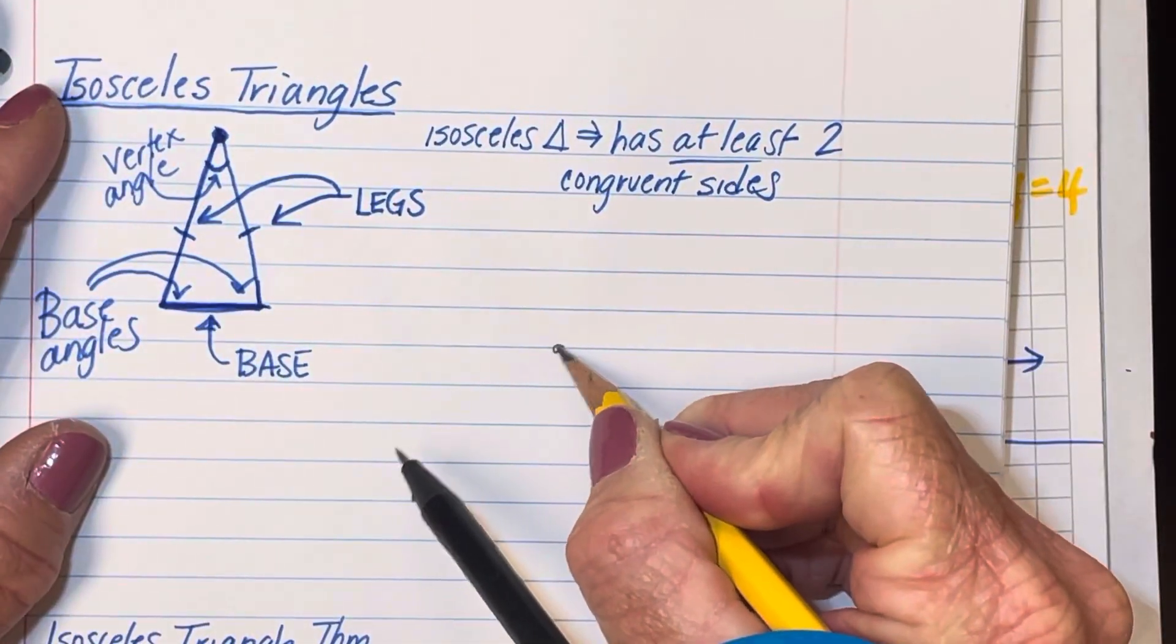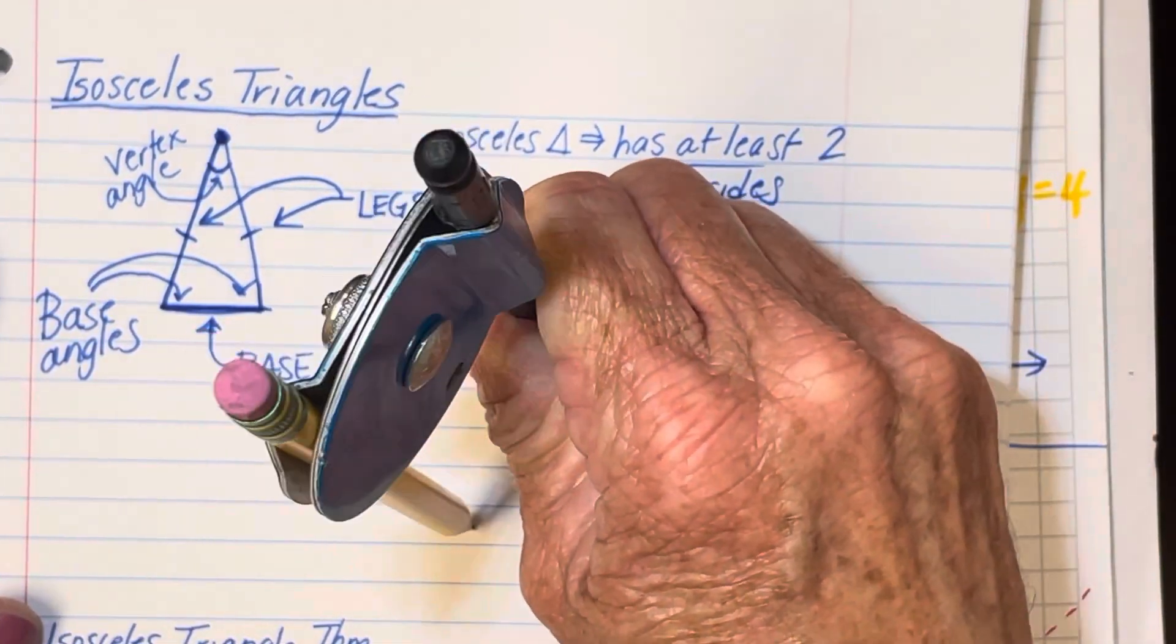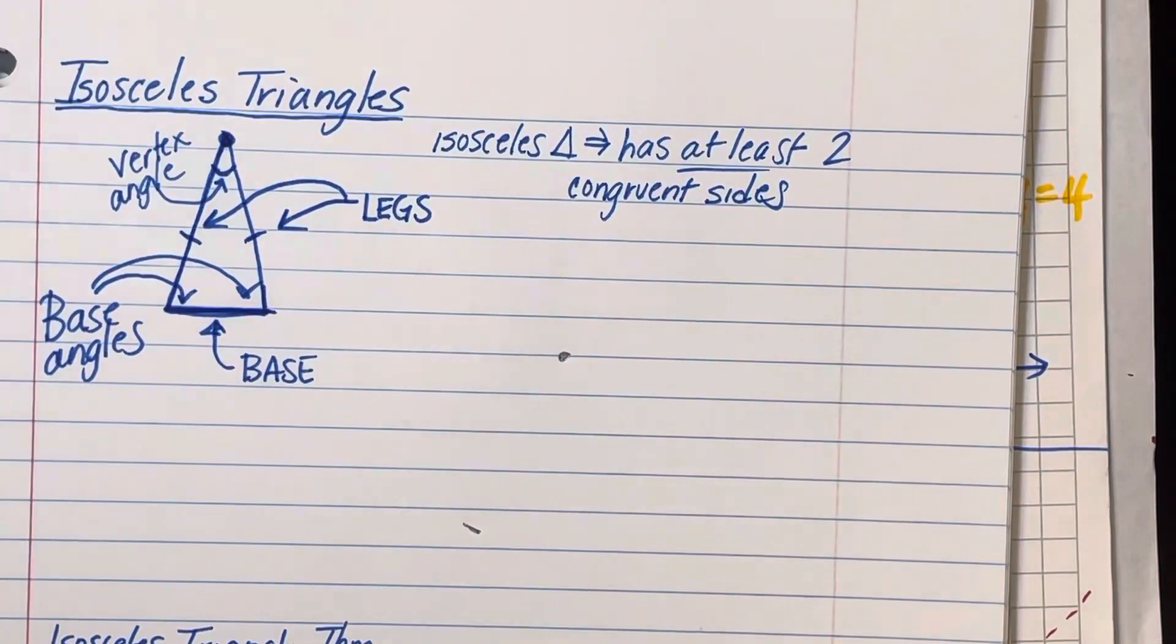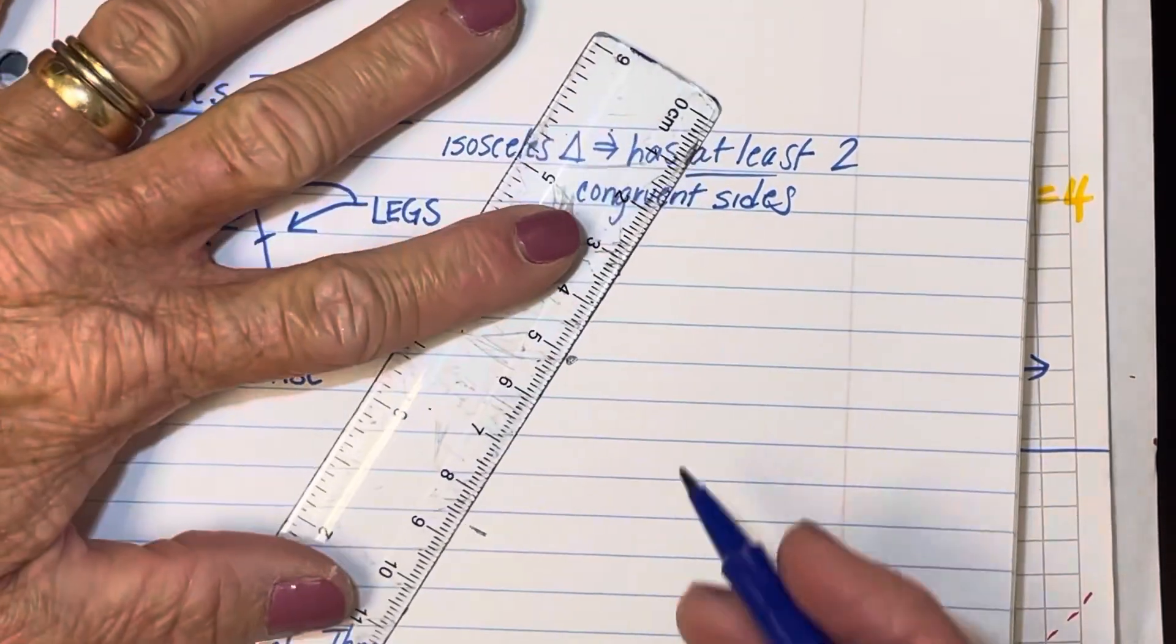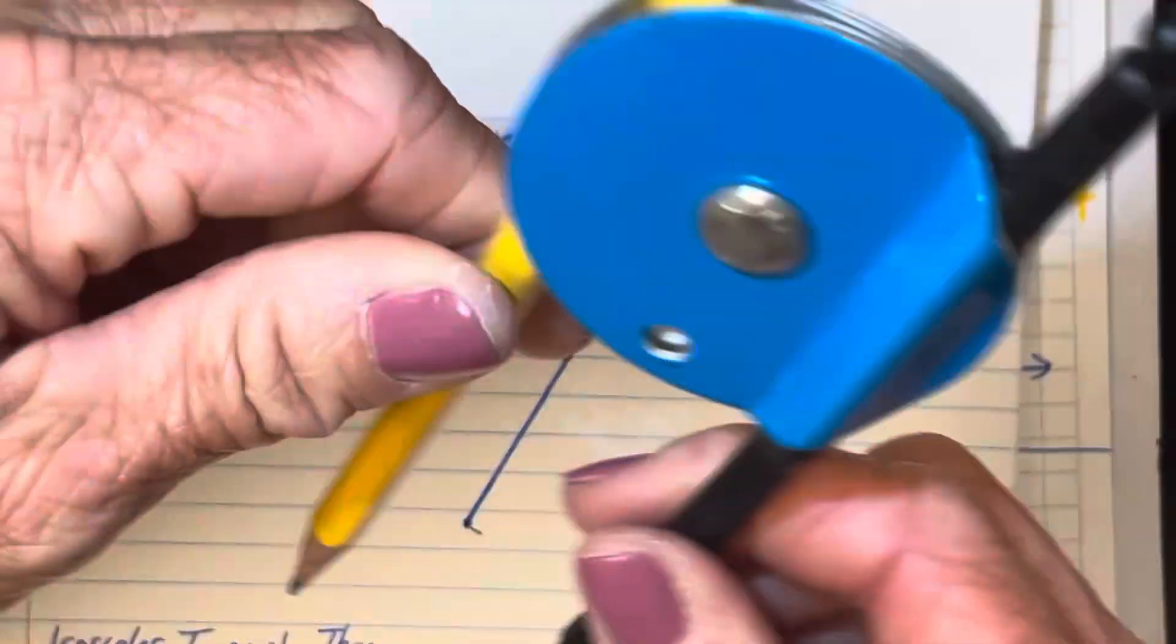So I'm going to construct an isosceles triangle. I've got a setting on my compass. This will be the vertex, and I'm going to mark off a side here.